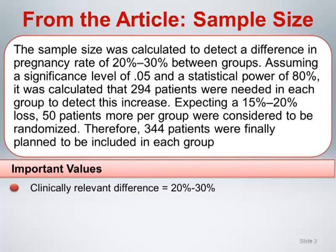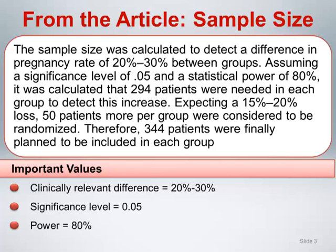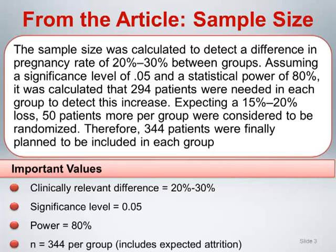The important values to focus on here are: the clinically relevant difference equal to 20 to 30%, significance level equal to 0.05, power equal to 80%, and sample size of 344 per group, which includes expected attrition.